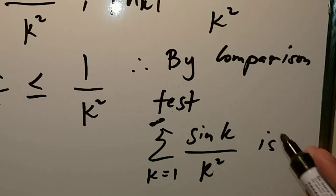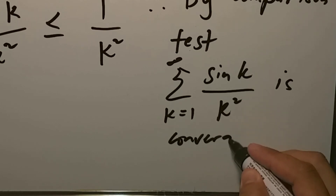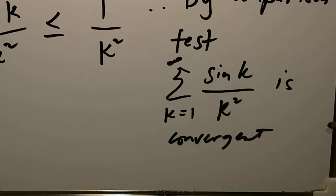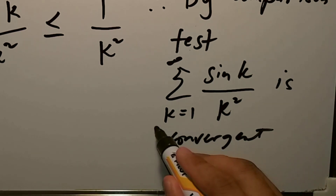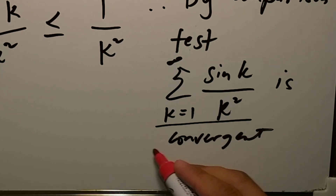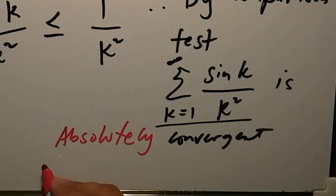Since summation of |sin(k)/k²| is convergent, and if we take the absolute value of the expression it is also convergent, we may say that this series is absolutely convergent.